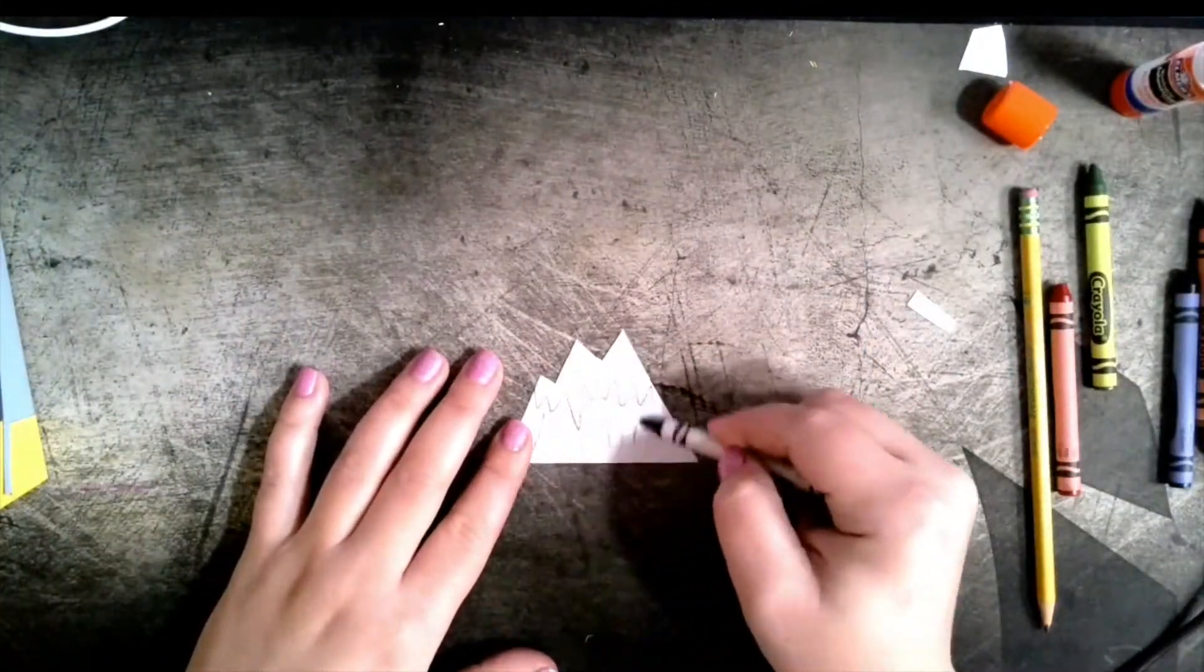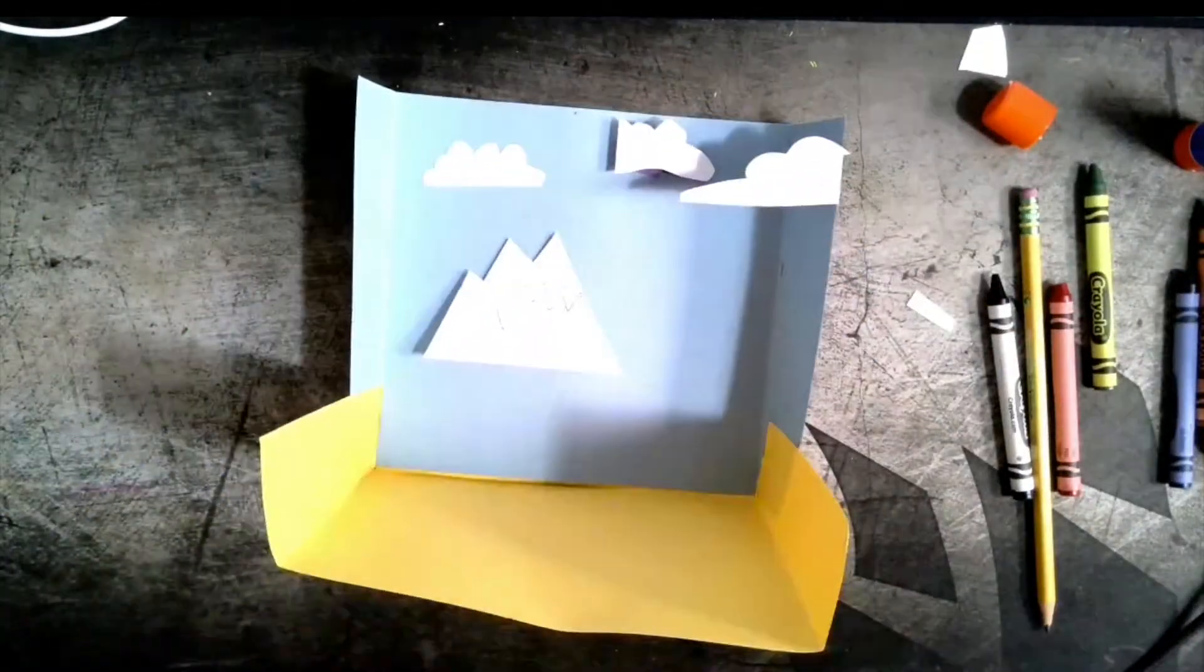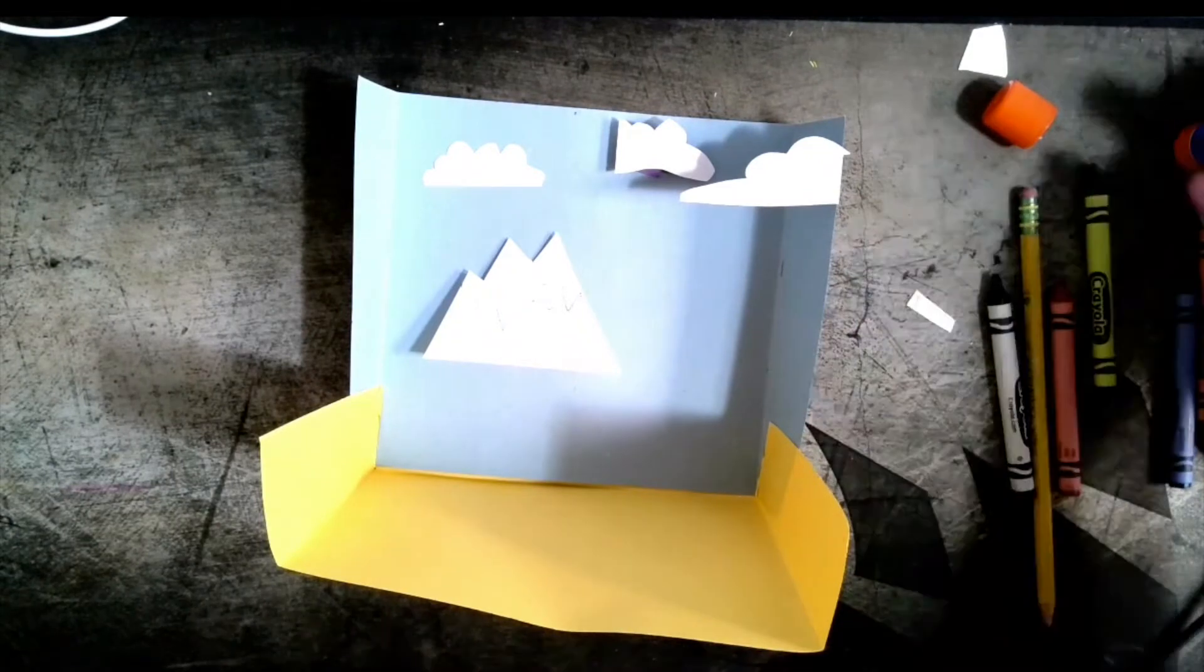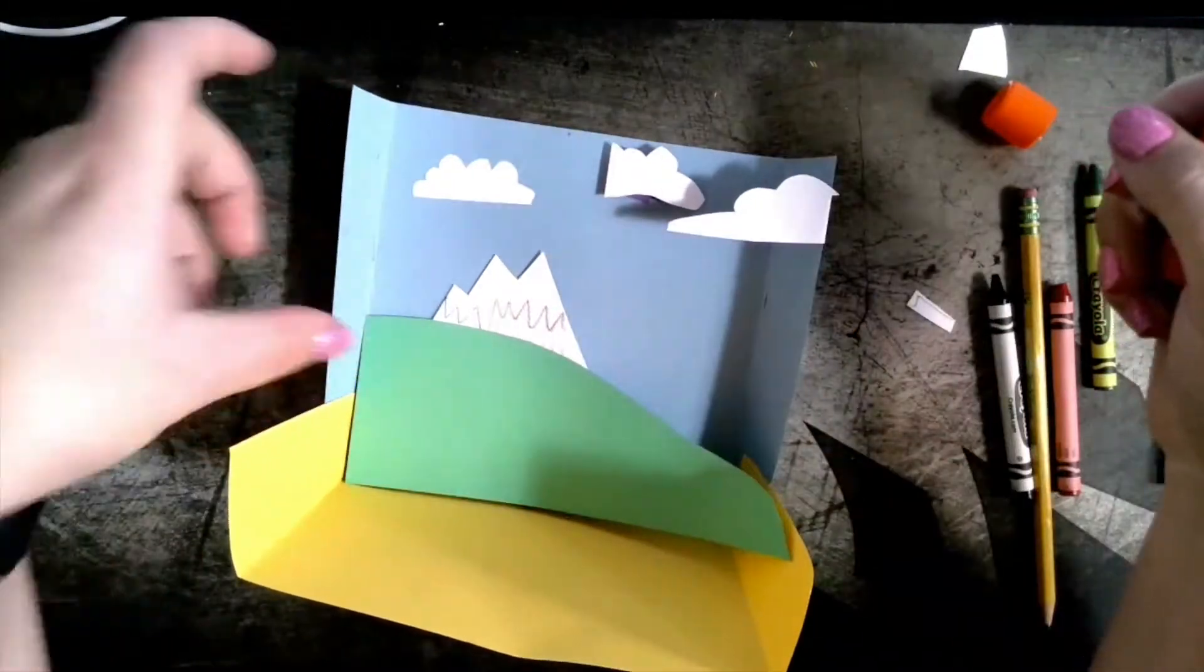As you think about the details that might be in the far distance, you can use cut out paper like I did for this mountain and you can overlap paper. I'm going to make a green grass hill for this habitat and I would just glue that to the back.